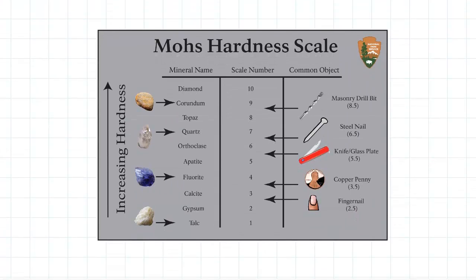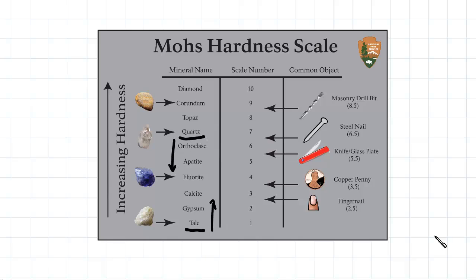Mohs hardness scale rates all the minerals according to how hard they are, and we can compare their hardness to known items such as drills, nails, or our fingernail. Looking at this scale, we can say that talc is the softest mineral and it will be scratched by any mineral above it. Quartz, which is quite a hard mineral, will be able to scratch any of these minerals and will be scratched by all of the minerals above it. Using this scale is quite useful when we are trying to determine what sort of mineral we are looking at in the lab.